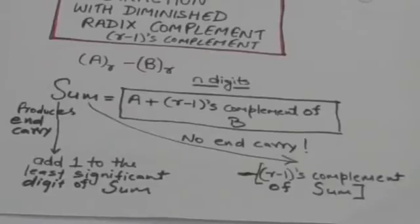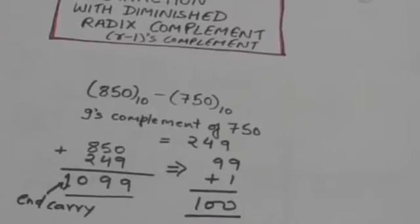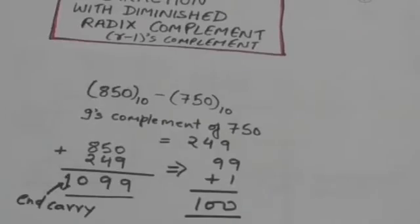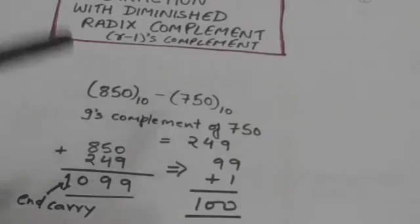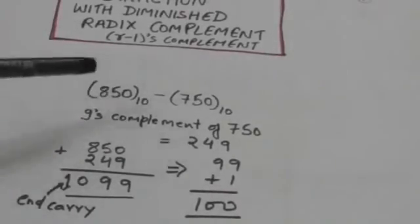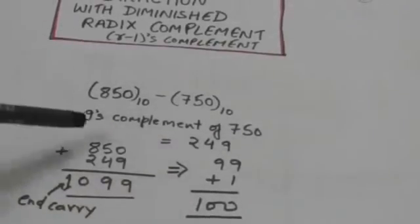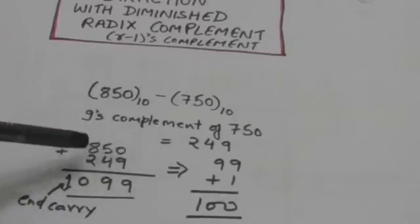It will be more clear after these examples. Suppose there are two decimal numbers 850 and 750, and we have to subtract 750 from 850. The first step is to find the 9's complement of 750, which is 249. Now find the sum of 850 and the 9's complement of 750, that is 249.